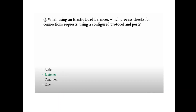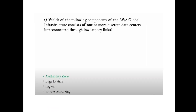Question: When using an Elastic Load Balancer, which process checks for connection requests using the configured protocol and port? Answer: Listener. Question: Which component of AWS global infrastructure consists of one or more discrete data centers interconnected through low-latency links? Answer: Availability Zone.